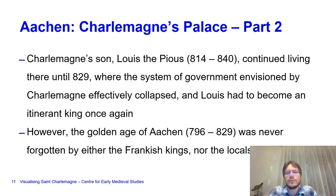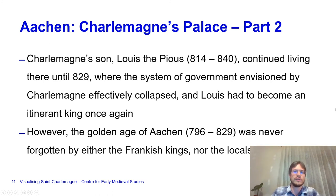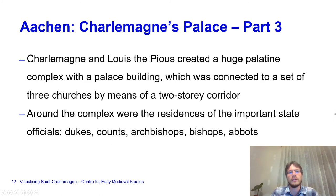Later rulers would still live in Aachen occasionally, some more, some less, but the golden age of Aachen was never forgotten by the Frankish kings or the locals. They remembered this as the golden age of the empire—late Charlemagne, early Louis the Pious.